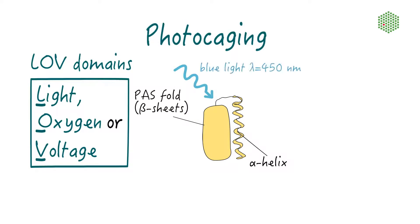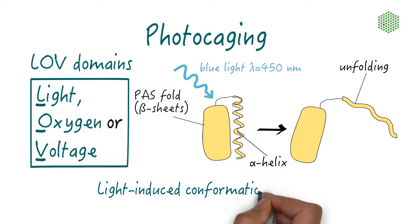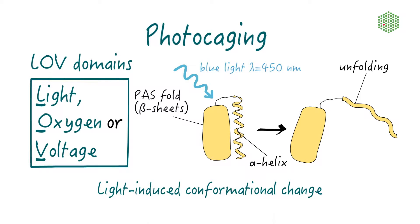Once exposed to blue light, one of these helical elements undergoes a conformational change. This can affect protein activity by interfering with allosteric regulation or by unmasking an active site.